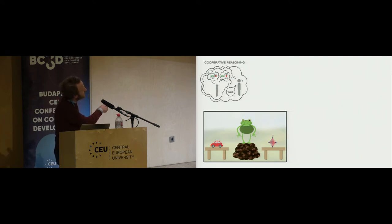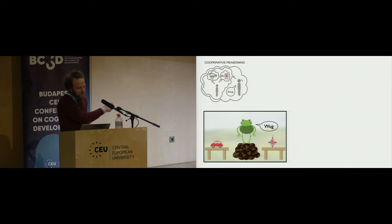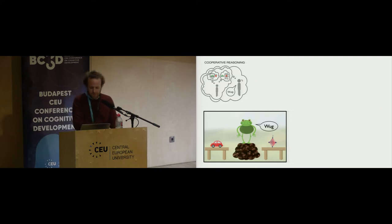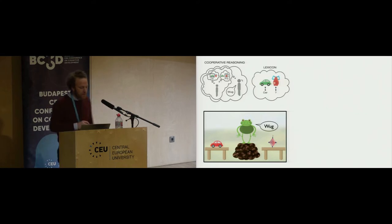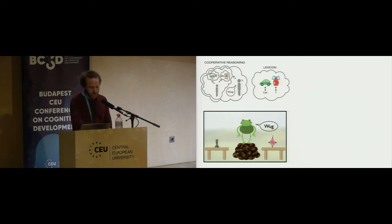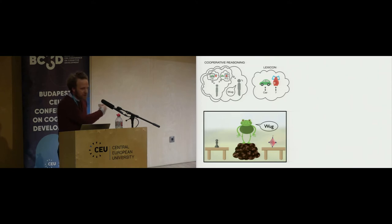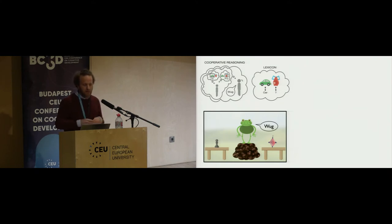In this context, the example I described applies: if frog uses the word 'wug,' you can reason that if frog wanted to tell you something about the car, they should have said 'car' — since they didn't, they probably mean the other thing. Within this task, we also entered prior lexical knowledge by varying the objects on the alternative table. The strength of the mutual exclusivity inference — how likely children are to conclude that 'wug' refers to the novel object — depends on their knowledge of the familiar object.